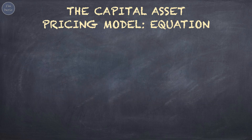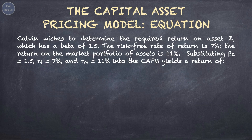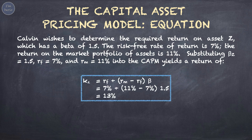Let's take an example. Calvin wishes to determine the required return on asset Z, which has a beta of 1.5. The risk-free rate of return is 7%, and the return on the market portfolio of assets is 11%. Substituting beta 1.5, risk-free rate 7%, and market return 11% into the CAPM, it yields a required return of 13%.